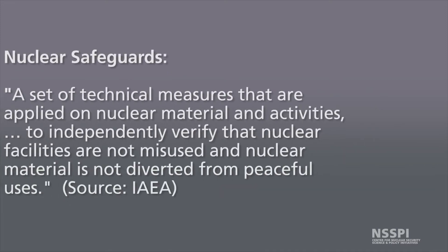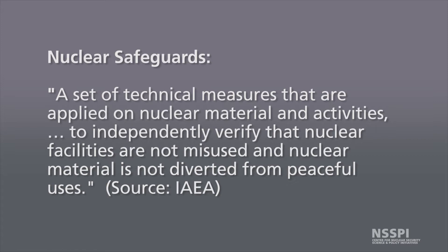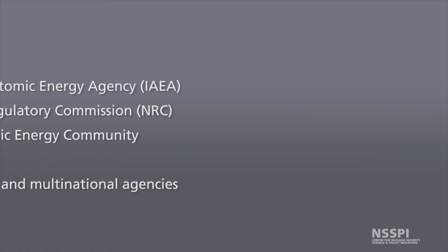Nuclear safeguards are a set of technical measures applied on nuclear material and activities to independently verify that nuclear facilities are not misused and nuclear material is not diverted from peaceful uses. Safeguards can be applied through several different entities or organizations. The most significant one we will focus on is the International Atomic Energy Agency, or the IAEA. Safeguards are also applied by other domestic agencies such as the U.S. Nuclear Regulatory Commission or the European Atomic Energy Community, or EURATOM, and there are other domestic or multinational agencies throughout the world that apply safeguards within countries or groups of countries.